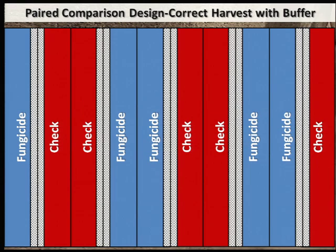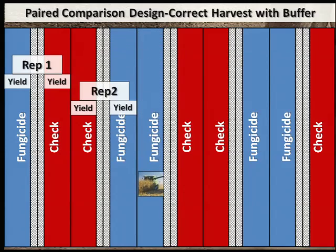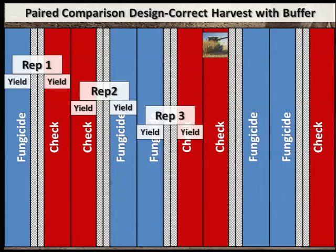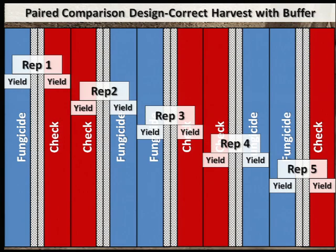When harvesting a field with buffer strips, such as used in our fungicide study, correct harvesting is important. You don't want to lose any yield data after all the work you put in. You'll harvest the same rows that you sprayed, leaving the buffer strips in the field. Yield from the first fungicide treatment is compared against yield from the first check strip to make Rep 1. The second check strip is then compared against the next fungicide treatment strip to make Rep 2. This pattern continues across the field until all check and fungicide treatments are harvested within each rep. Once all the fungicide and check strips are harvested, the buffer rows can then be harvested.